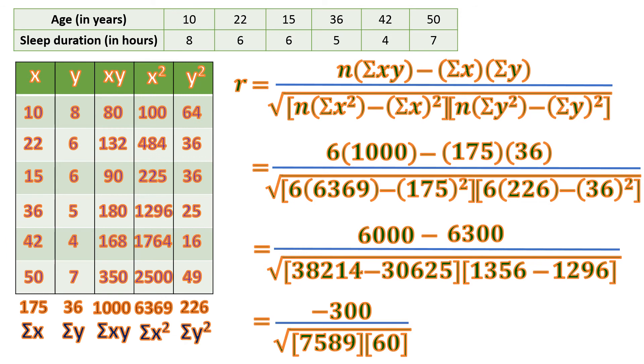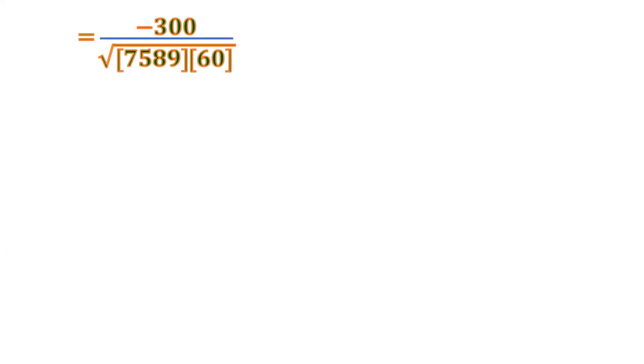We're going to erase everything to have some space to continue. Let's copy the last solution. We're going to get the product inside the radical sign: negative 300 over the square root of 7589 times 60, which equals 455340. Then we'll get this square root: negative 300. I used approximately equal to because the square root of 455340 is going to be a long and irrational number, so we'll just round it off. That's why we use approximately equal to.